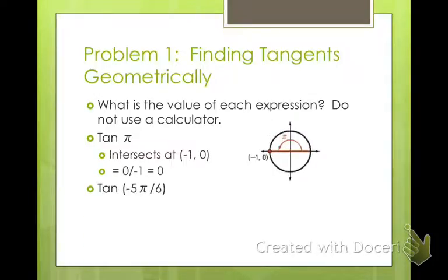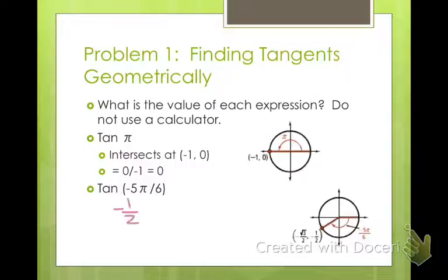What about negative 5π over 6? Well, if you remember on the unit circle, where is negative 5π over 6? It's right here. Remember to go in a negative direction, 5π over 6. And then that point is negative square root of 3 over 2, negative 1 half. In order to find tangent, you take negative 1 half and divide it by negative square root of 3 over 2.